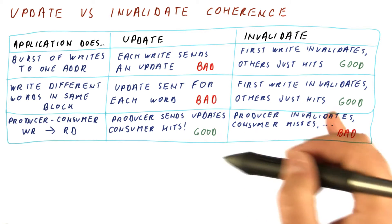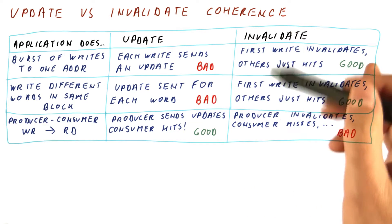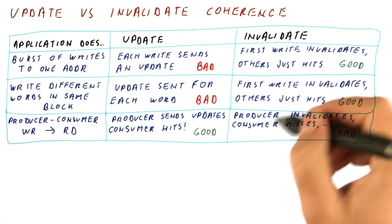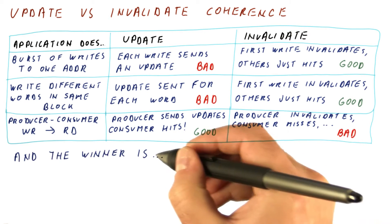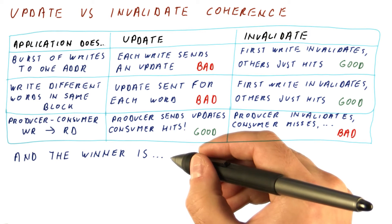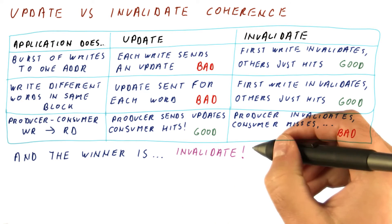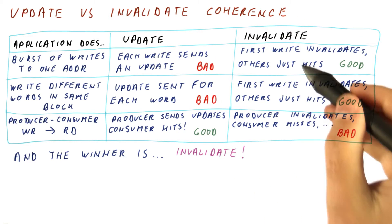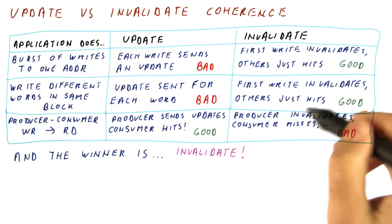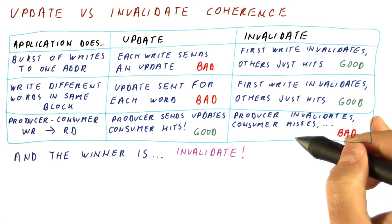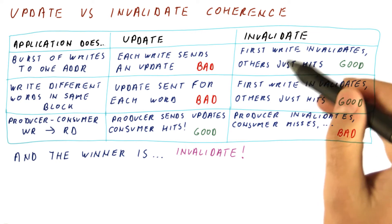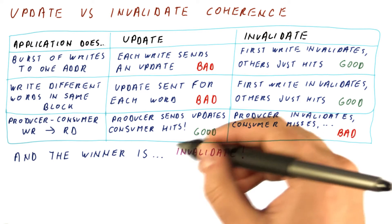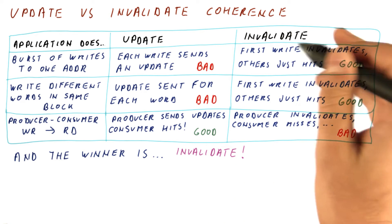As we can see from this table, update and invalidate-based protocols have different advantages. So which one do we choose in practice? It turns out that all modern processors use the invalidate-type protocol, but not exactly for these reasons. Invalidate-based protocols have some strengths and some weaknesses, and overall they tend to be slightly stronger than update on average, but that's not really the knockout punch that makes them win handily.